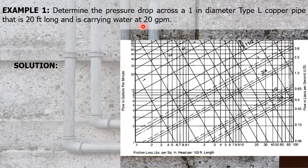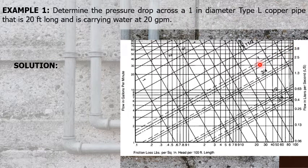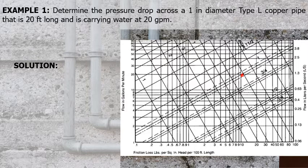So we have 20 GPM, and the 1-inch diameter is this diagonal line. This is the intersection of the two, approximately here. And we project that with the friction loss at the bottom, which is about 10 psi per 100 feet length.